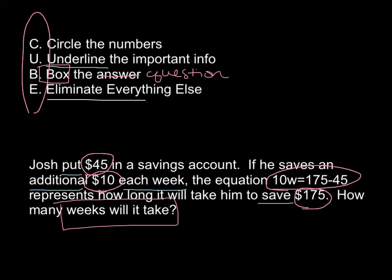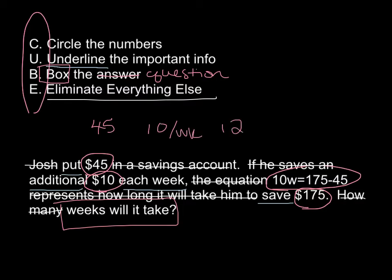Everything else we get to eliminate — we get to cross out: Josh, savings account, 'if he saves an additional,' 'equation represents how long it will take him to save,' and 'how many.' So essentially, what we are left with is $45, $10 per week, the equation 10W equals $175 minus $45, and $175.